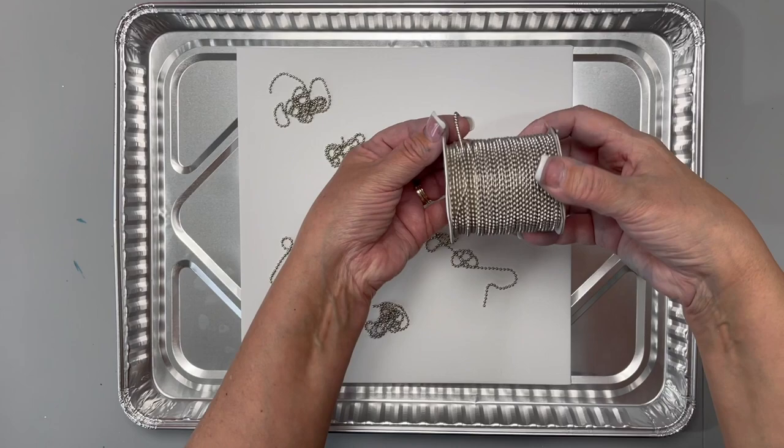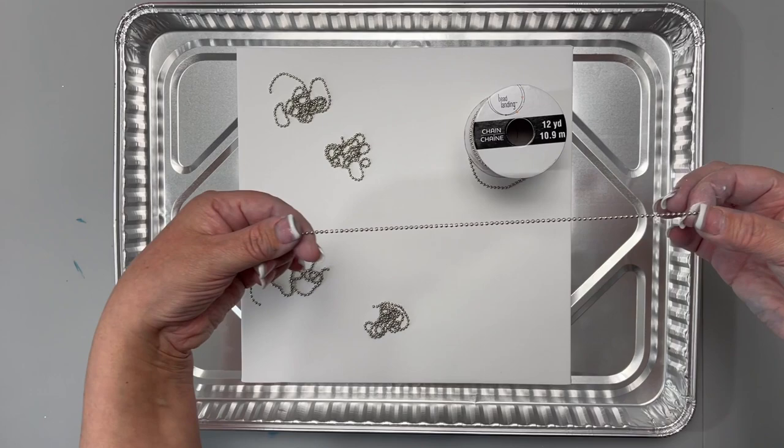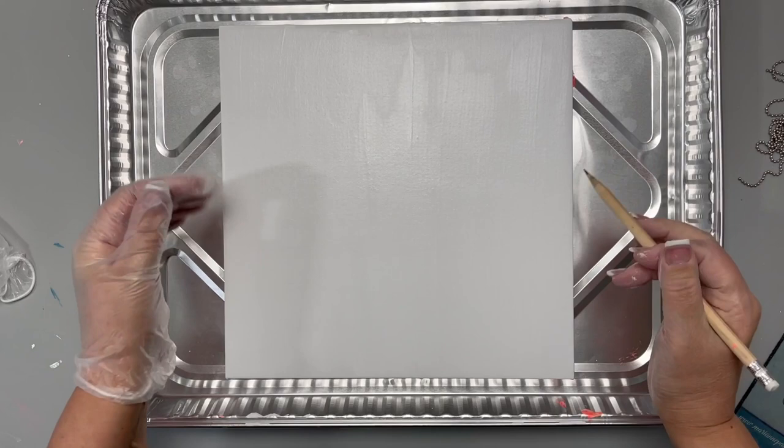I cut the chain into five equal pieces. Super easy to cut just with regular scissors. And then we're going to base coat our surface white. Okay, so the base coat white has dried.